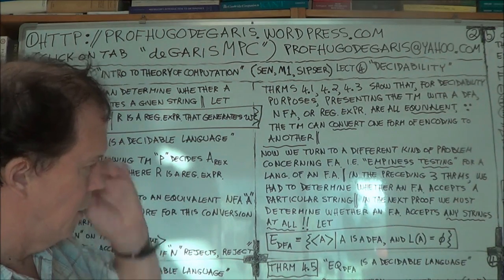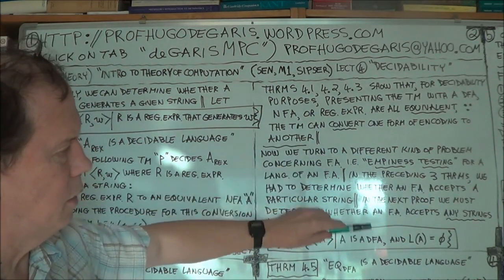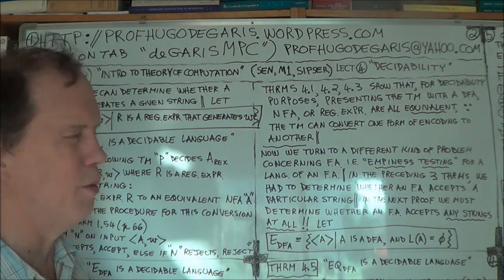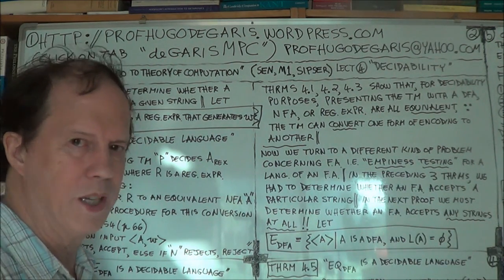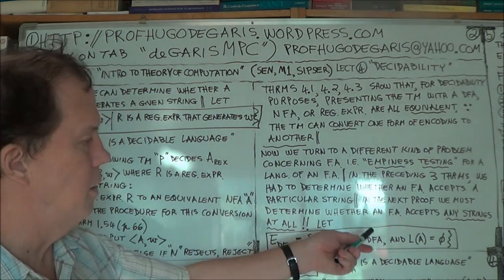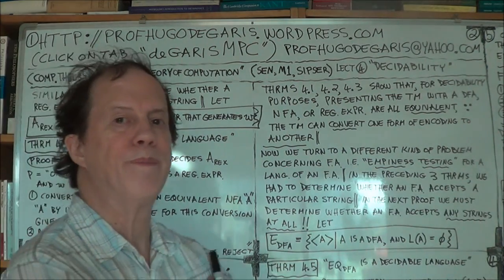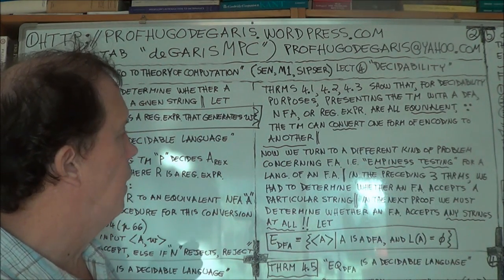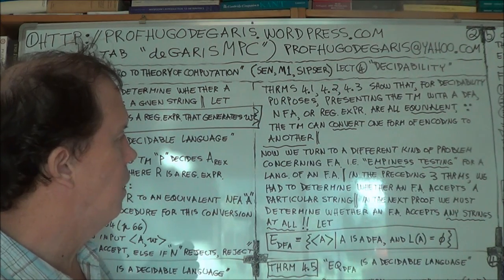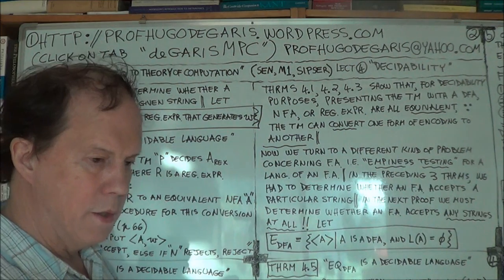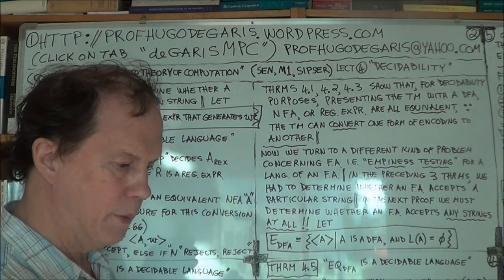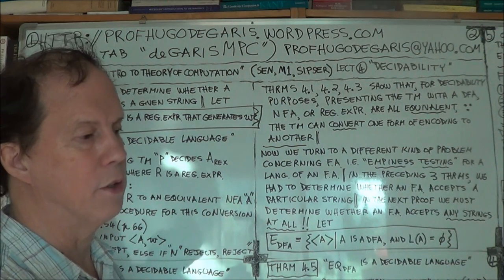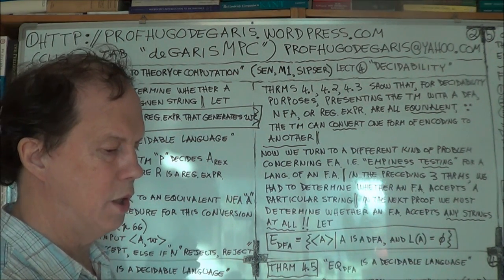Now we do another language. This is more of a tool — we're going to need it for future theorems. It's quite a useful tool. It might seem at first sight somewhat trivial, but it's important because we need it — it's an important stepping stone for future theorems. We're asking whether, when we're talking about finite automata, is it possible that the language recognized by a finite machine is just empty?